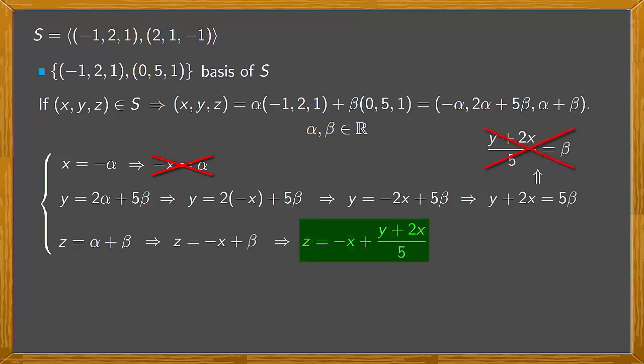Now we'll work with the third equation. Move -x to the left side, and we get z + x = (y + 2x)/5. So 5(z + x) = y + 2x. Expanding the brackets and moving what's on the right side to the left, we have 5z + 5x - y - 2x = 0. Simplifying, we're left with 3x - y + 5z = 0.